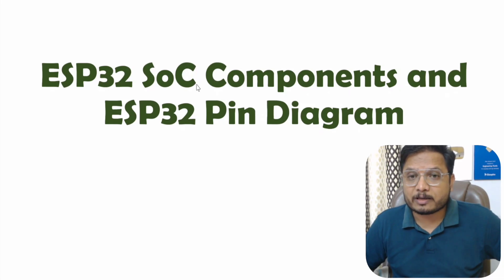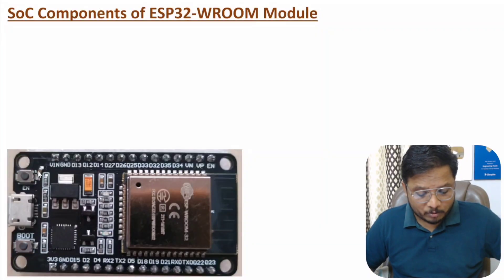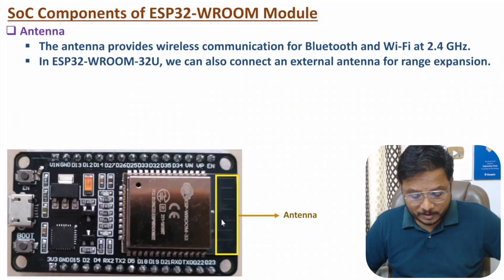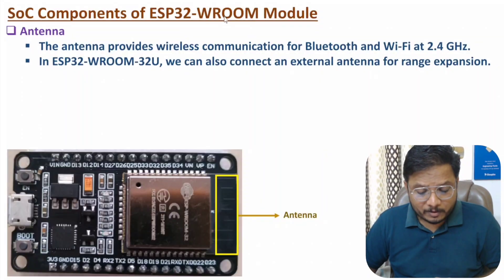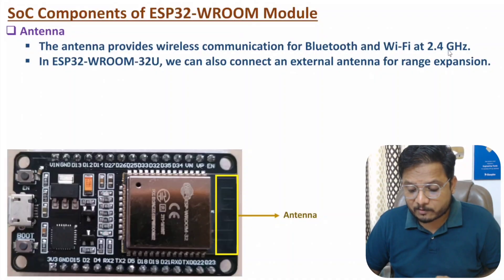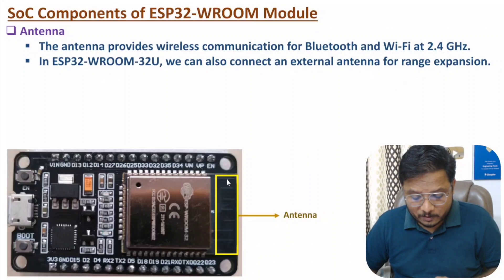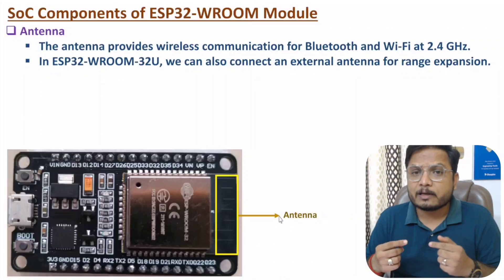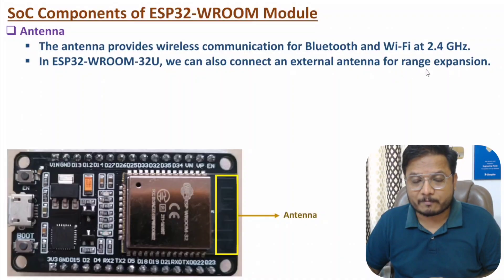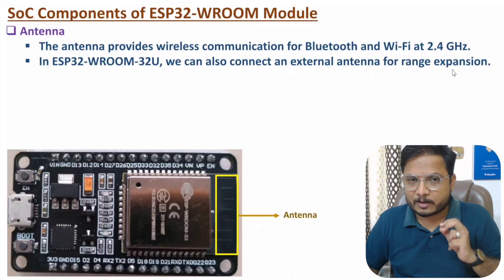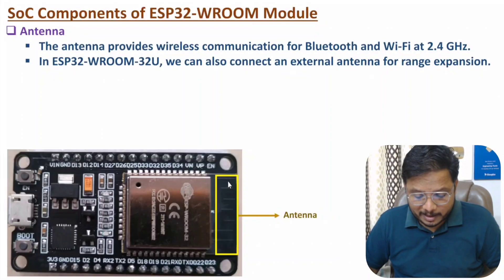SoC means system on chip component. Here you can observe we have the ESP32 module, and the first component is the antenna. This antenna is used for wireless communication. With this ESP32 Vroom module, we have Wi-Fi and Bluetooth connection at 2.4 GHz of frequency. So that wireless connection happens with the use of this antenna. With this module, we have an on-chip antenna that is used to connect Bluetooth and Wi-Fi at 2.4 GHz.